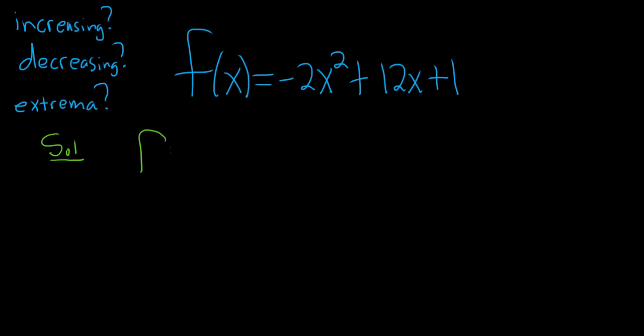So f prime of x. It's a pretty easy derivative. We just use the power rule. So multiplying the 2's because you bring it down so you get negative 4x. And the derivative of 12x is 12 and the derivative of 1 is 0. And as you can see there's no division by 0, there's no funky square roots. So this is never undefined.